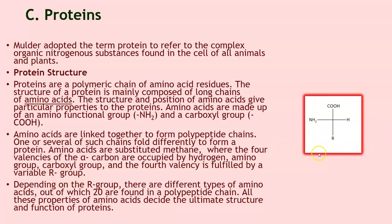So you have the variable R group, the hydrogen, the amino group, and the carboxyl group. Depending on the R group, there are different types of amino acids, out of which 20 are found in polypeptide chains. All these properties of amino acids decide the ultimate structure and function of the proteins.